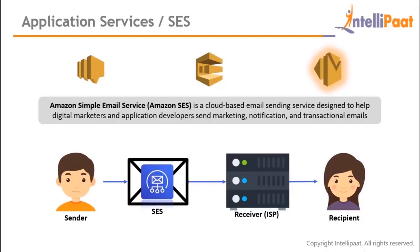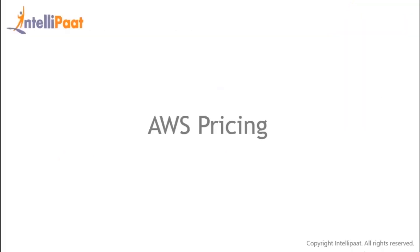Amazon SES (Simple Email Service) is a cloud-based email sending service designed for internet marketers and application developers to send marketing notifications, transactional emails, or bulk emails to recipients. The sender sends an email to SES, which pushes it to the receiver's ISP (Internet Service Provider), which then delivers it to the recipient.